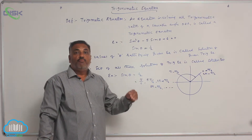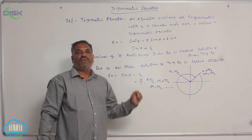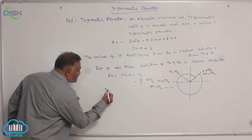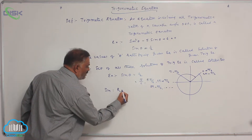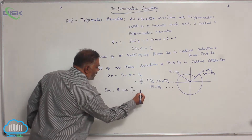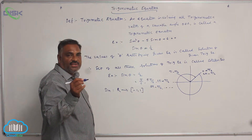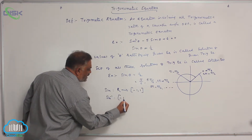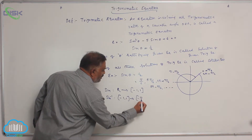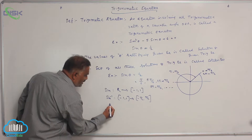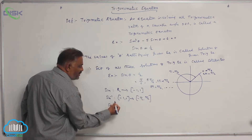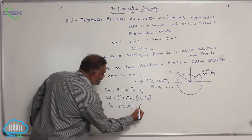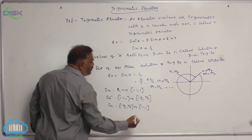Now we'll discuss the bijective domain of the basic trigonometric functions: sine theta, cos theta, and tan theta. Sine is a function from the set of real numbers to the interval minus 1 to 1. For the existence of an inverse, sine inverse is defined from minus 1 to 1 to the interval minus pi by 2 to pi by 2. Rewriting, the inverse of sine inverse is sine itself, defined from minus pi by 2 to pi by 2 to minus 1 to 1.